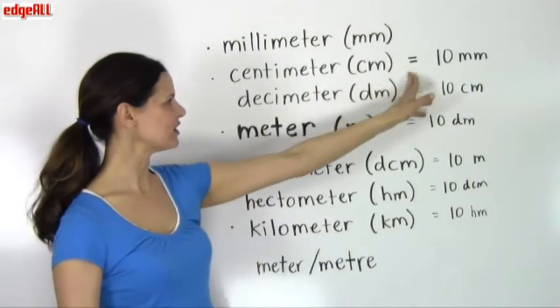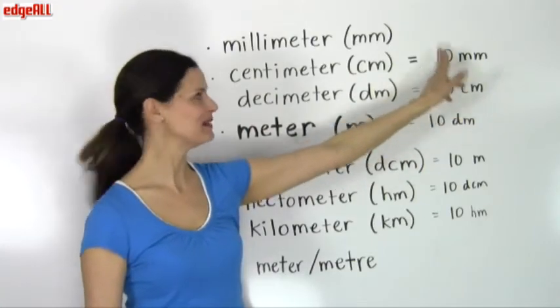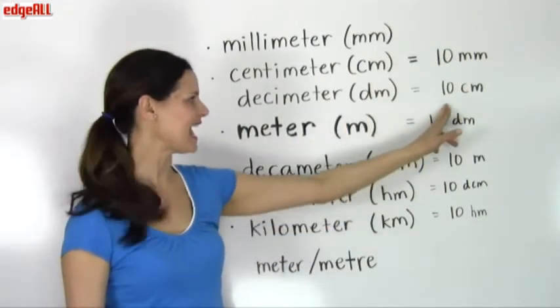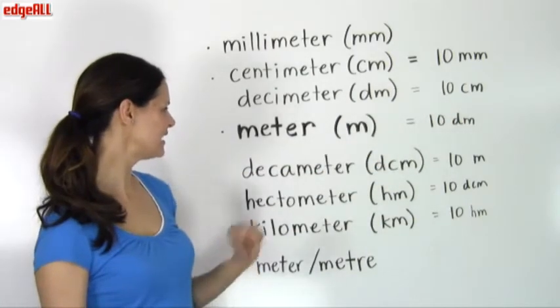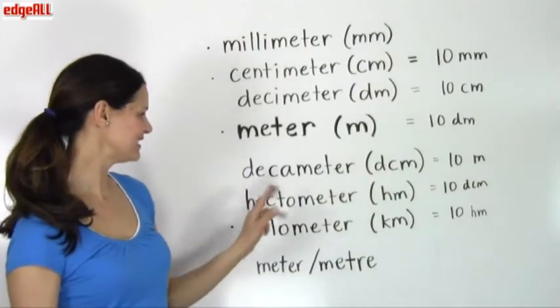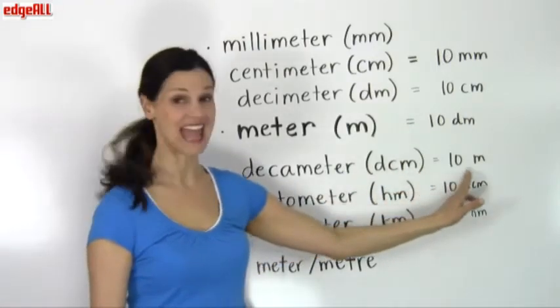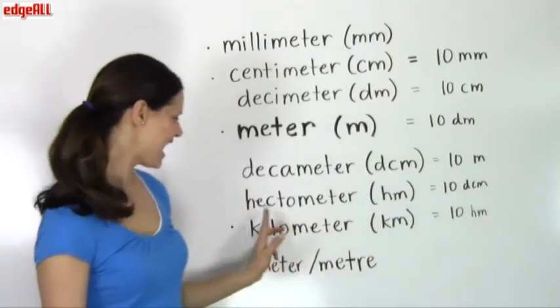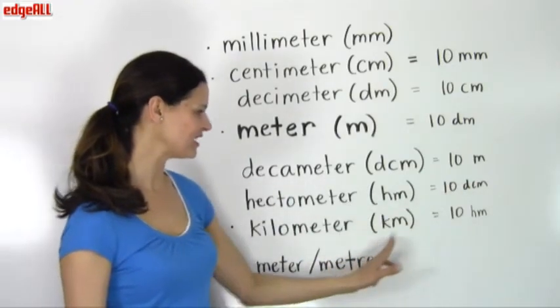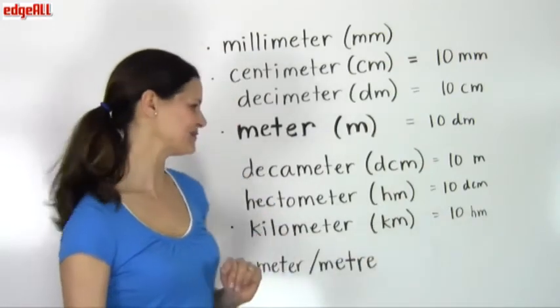So a centimeter is equal to 10 millimeters. A decimeter is equal to 10 centimeters. A meter is equal to 10 decimeters. Decameter is equal to 10 meters. Hectometer is equal to 10 decameters, and a kilometer is equal to 10 hectometers.